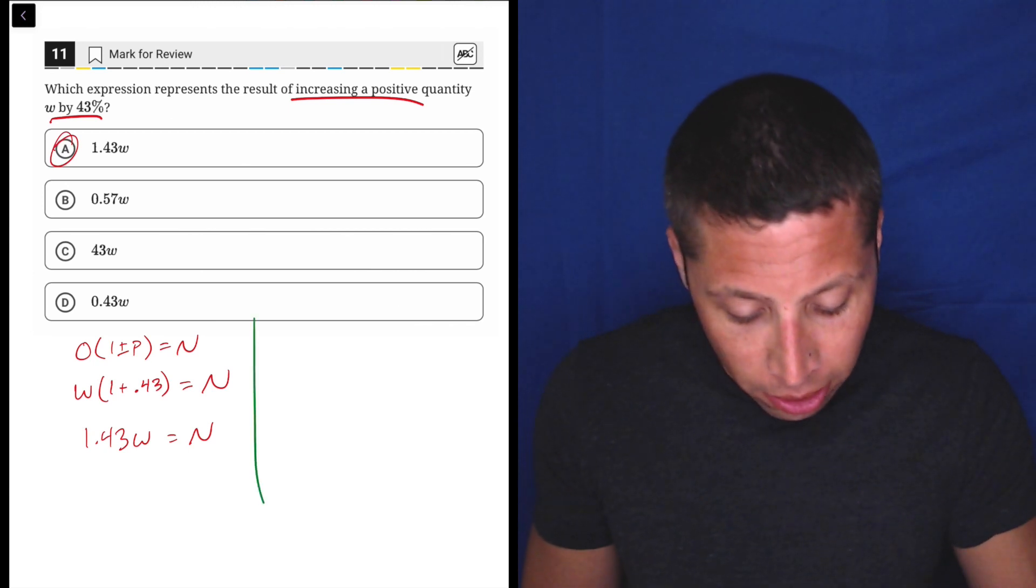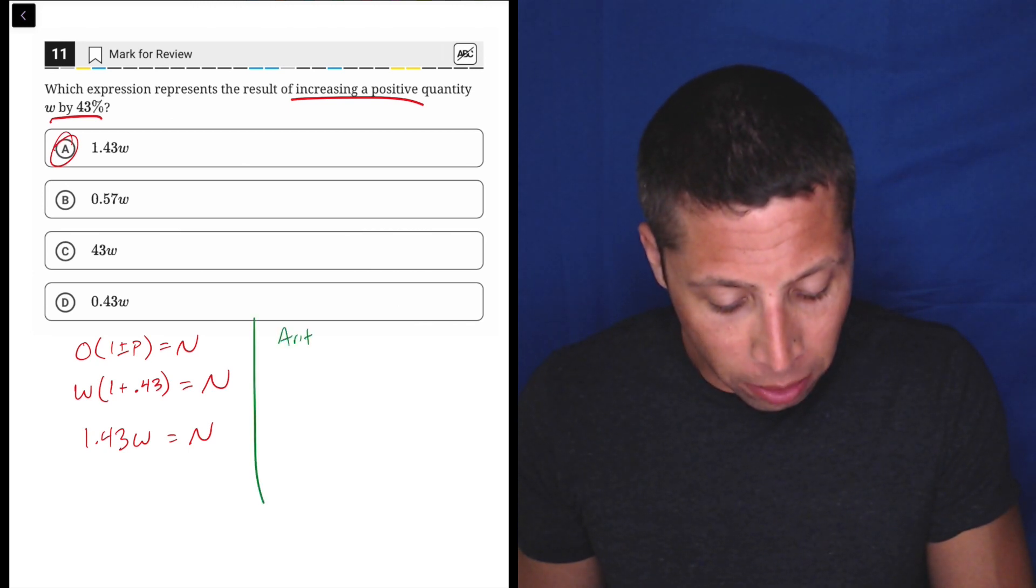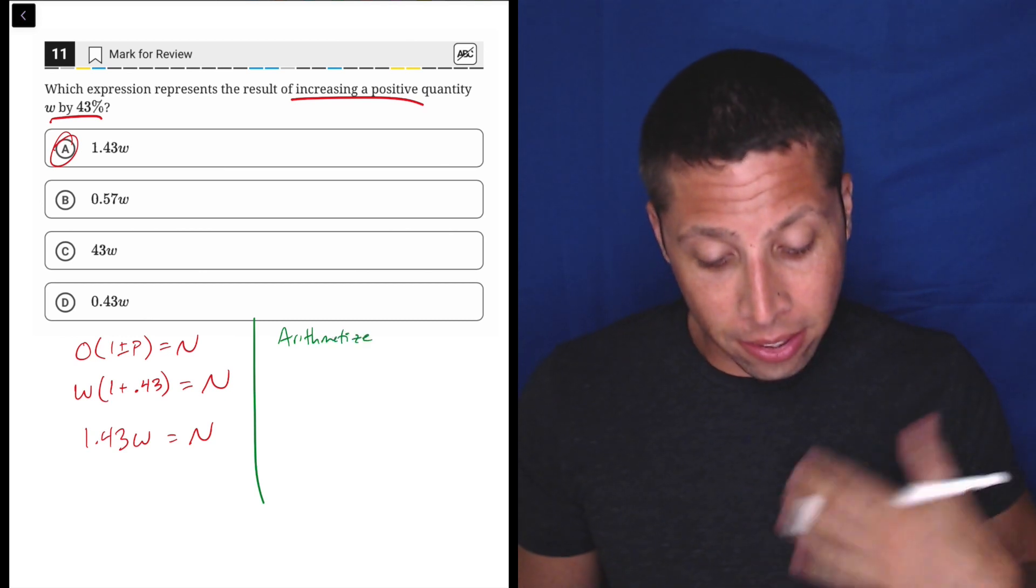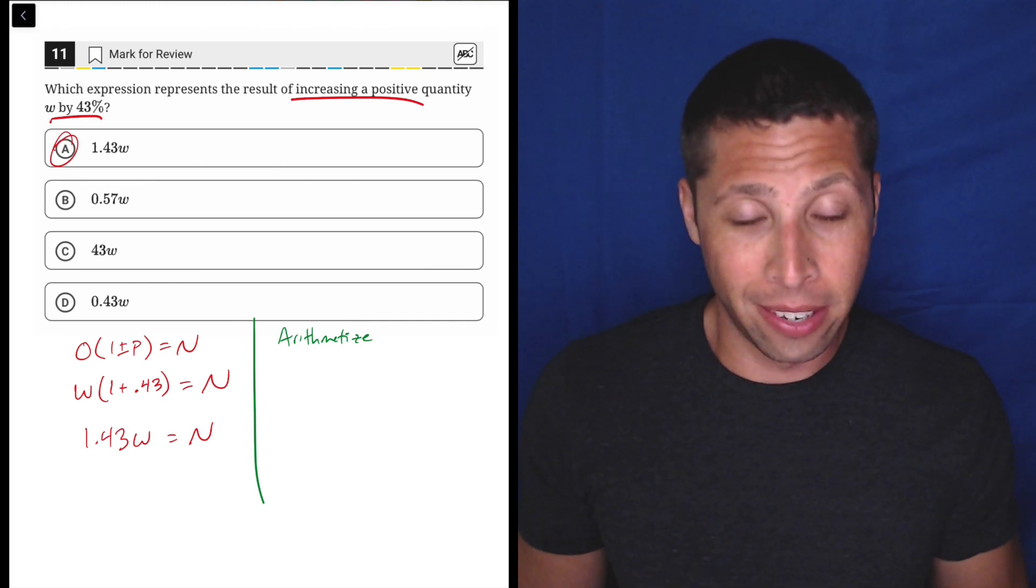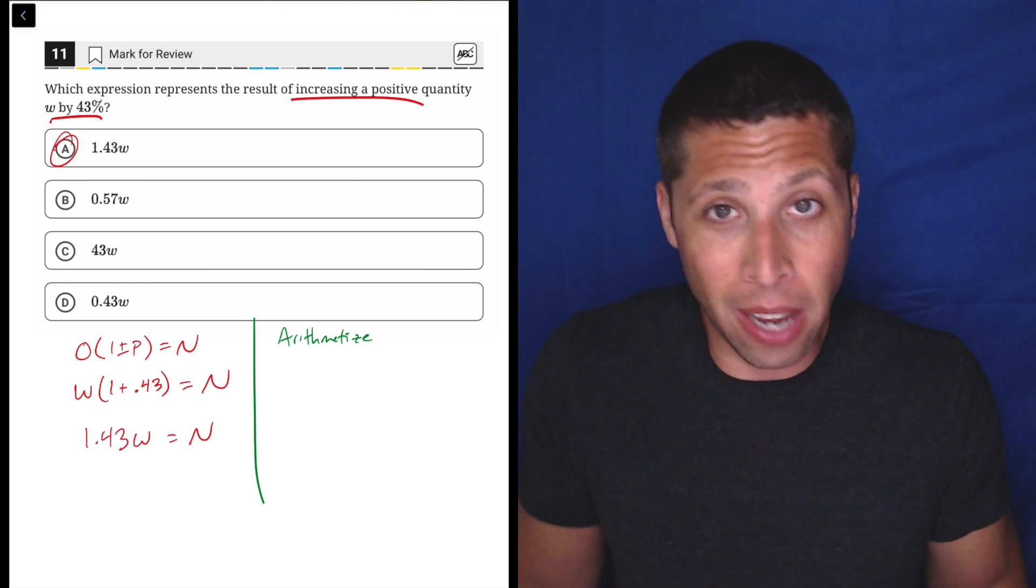But if you're still unsure, we could arithmetize here. We're asked to increase a positive quantity W by 43%. If that bothers you, then just make W a number.